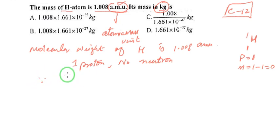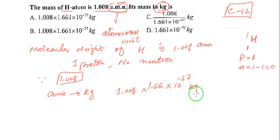So we can say that atomic mass of hydrogen is 1.008 amu. Now we have to convert it to kg. We have amu - we have to convert it to kg. For that purpose, we have to multiply 1.008 with 1.66 multiplied by 10 to the power minus 27.